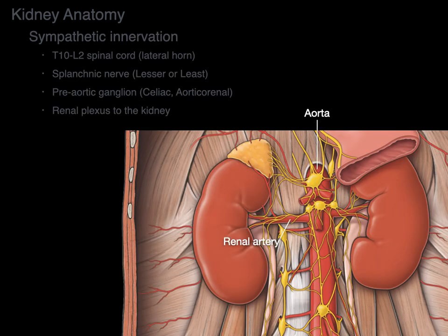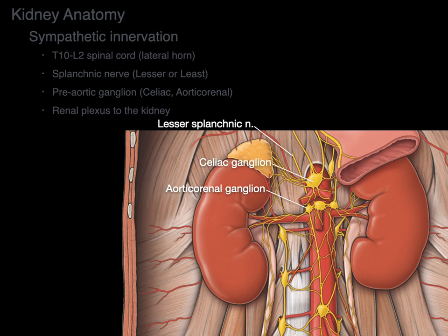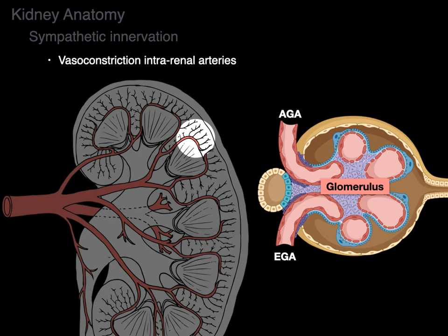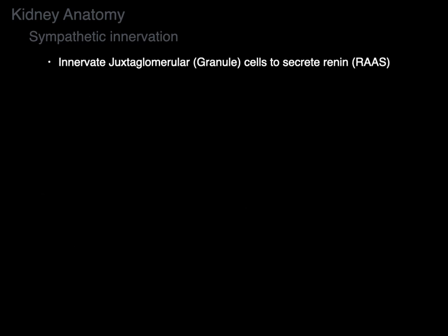We can see the lesser splanchnic nerve synapsing in the celiac and aorticorenal ganglion, and sympathetics wrapping around the renal artery and entering the kidney. This causes vasoconstriction of intrarenal arteries, with special focus on afferent and efferent glomerular arterioles. If someone is bleeding out, sympathetics can cause such vasoconstriction that blood is shunted directly away from the kidney. Sympathetics also innervate juxtaglomerular cells (JG cells), also known as granular cells, which secrete renin.